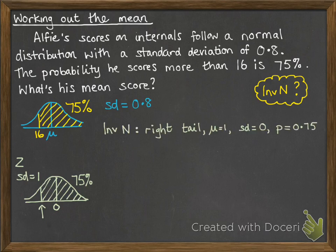So we're using our inverse normal, and the details we'll put in is that we've got a right tail, the mean is 0, the standard deviation is 1, and the probability is 0.75. When you do that, you get your answer of z being minus 0.671.